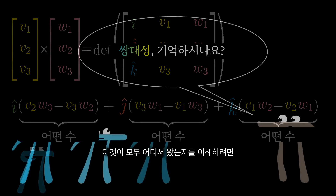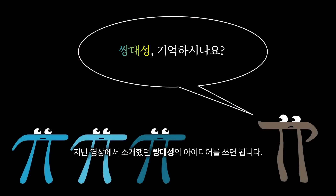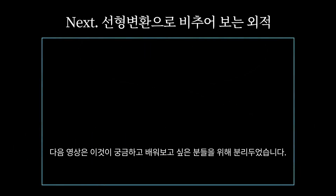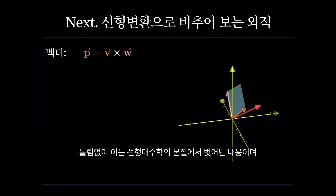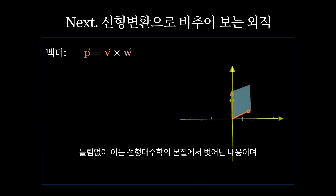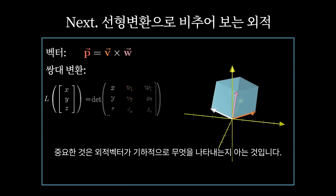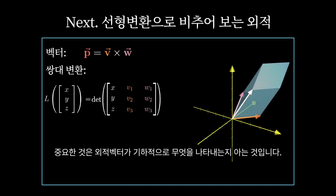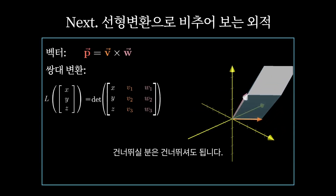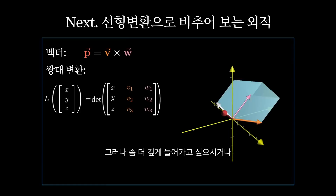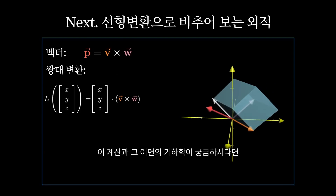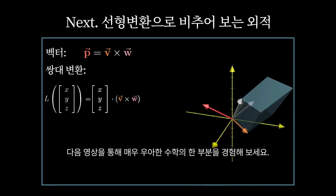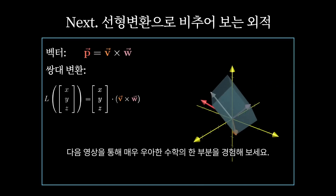To understand where all of this comes from, it helps to use the idea of duality that I introduced in the last video. This concept is a little bit heavy, though, so I'm putting it in a separate follow-on video for any of you who are curious to learn more. Arguably it falls outside the essence of linear algebra. The important part here is to know what that cross product vector geometrically represents. So if you want to skip that next video, feel free. But for those of you who are willing to go a bit deeper and who are curious about the connection between this computation and the underlying geometry, the ideas I'll talk about in the next video are just a really elegant piece of math.